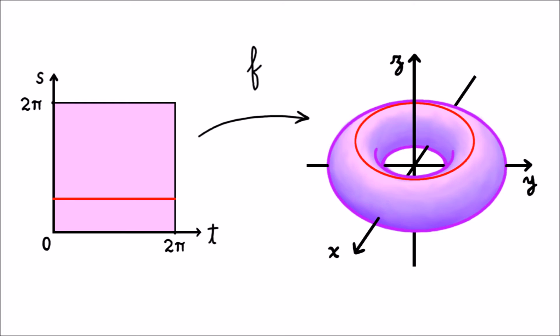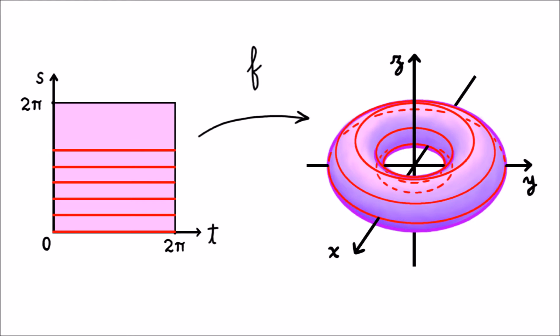In fact, this parametrization turns all horizontal lines into horizontal circles, parallel to the xy-plane, running around the hole in the torus.